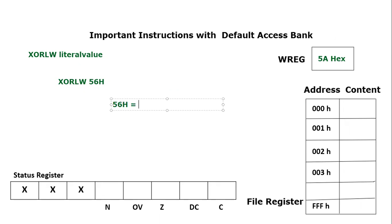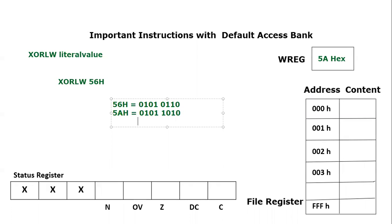So 0x56 in binary is 0101 0110, and 0x5A is equal to 0101 1010. We know that in an exclusive OR operation, whenever we have different values it will produce 1, and if we have the same value it will produce 0.